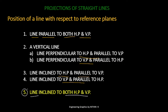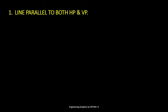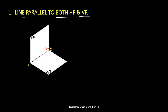The fifth position is a line inclined to both HP and VP — that is, inclined to both the horizontal plane and the vertical plane. In this video, we focus on the first position: a line parallel to both the horizontal plane and the vertical plane. Line AB is parallel to both HP and VP.